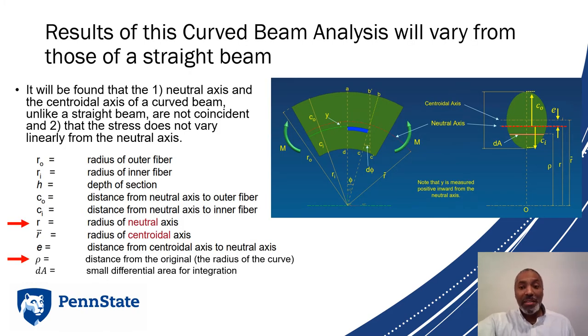The results of this beam analysis will vary from those of a straight beam. Number one, the neutral axis and the centroidal axis of the beam, unlike a straight beam, will not be coincident. And second, the stress does not vary linearly from the neutral axis.